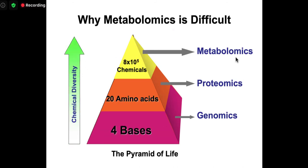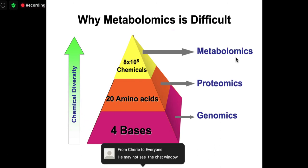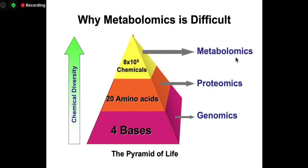The reason why metabolomics has limited coverage is the complexity of the chemistry. Sequencing genes means you only have to analyze four different bases. Proteins are made up of 20 amino acids — the chemistry is a little more complicated, which is why we can't sequence proteins quite as easily. In the case of metabolites, we're dealing with hundreds of thousands of different chemicals and around 3,000 to 4,000 different chemical classes. That wide diversity of chemicals intrinsically makes metabolomics more difficult, requiring a whole bunch of different techniques and platforms.